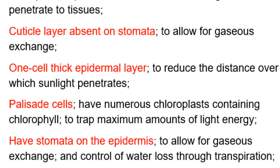The palisade cells have numerous chloroplasts containing chlorophyll to trap the maximum amount of light energy. They also have stomata on the epidermis to allow gaseous exchange and control of water loss through transpiration.